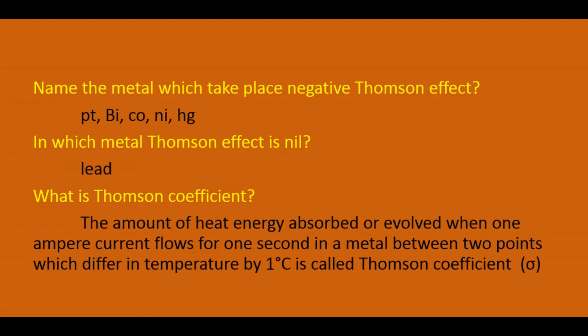The Thomson coefficient is the amount of heat energy absorbed or evolved when 1 ampere current flows for 1 second in a metal between 2 points which differ in temperature by 1 degree Celsius. The Thomson coefficient is denoted by the letter sigma (σ). The unit of the Thomson coefficient is volt per degree Celsius.